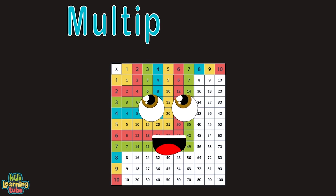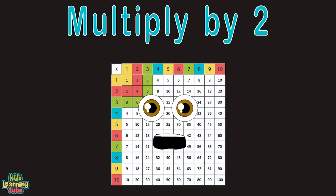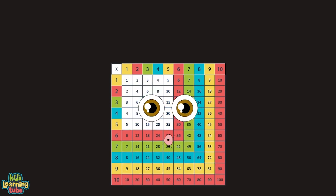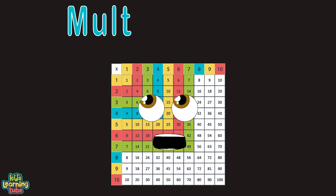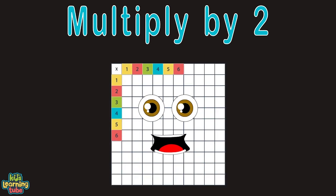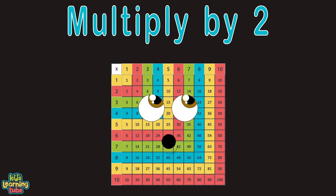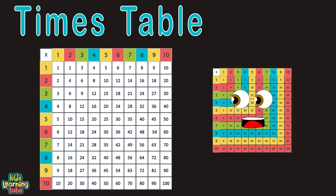Let's multiply by two, all the way up to ten. We'll multiply by two, then we'll do it again. When we multiply by two, you'll use the times table. It's a fun, easy way to learn because you're able.